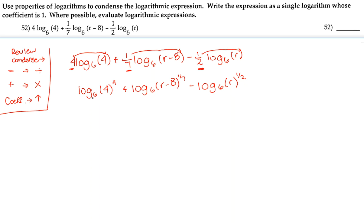These first 2 logs are being added to each other and they have the same base of 6. So we can turn that into multiplication of 1 log. So let's write that as log base 6 of 4 to the power of 4 times (r - 8) to the power of 1/7th. Okay, and then we still have this.